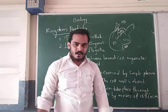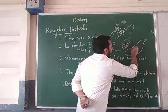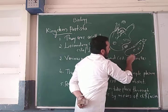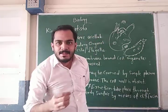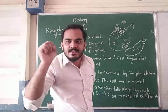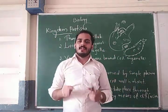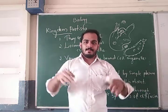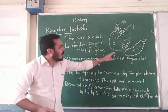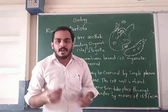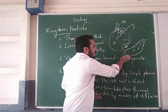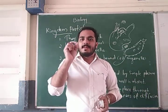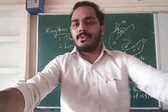Pseudopodia helps in moving from one place to another. In the case of paramecium, on the outer side there is a hair-like structure called cilia. This hair-like structure also helps to move from one place to another — it is a locomotory organ. Another organism, euglena, has one flagellum. Flagella means a tail-like structure, and this flagella also helps in locomotion from one place to another.